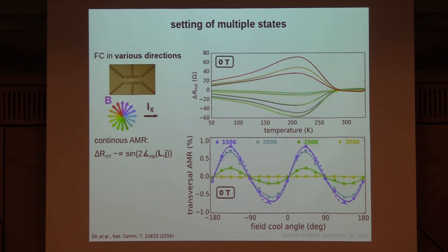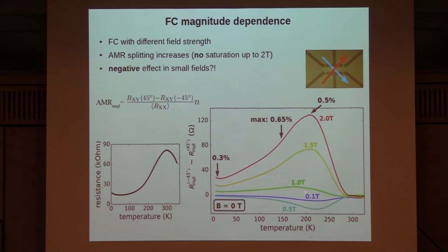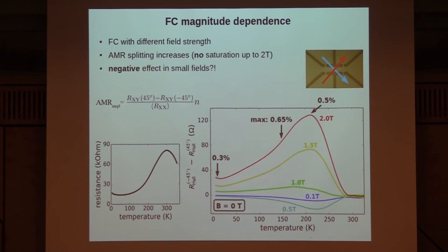So we can write anisotropic magnetoresistance into the system by field cooling — most likely by controlling the domain distribution. Applying cooling fields in many different directions and reading in zero field while heating, we see distinct traces for all directions. Plotting versus the cooling field angle reveals a harmonic dependence — AMR in zero field in the antiferromagnet. The effect scales with the cooling field strength, with a small sign change we don't fully understand, and is not yet saturated — we're not reaching a truly single-domain state. The magnitude is a fraction of a percent, roughly 0.5–0.6%.